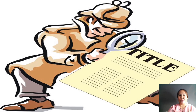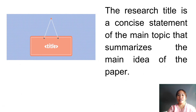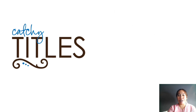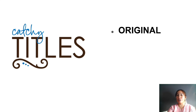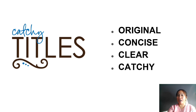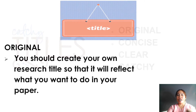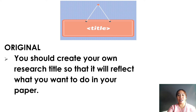Now, after you choose your topic based on the given guidelines, you are ready to construct your own research title. The research title is a concise statement that summarizes the main idea of your paper. Your research title should be original, concise, clear, and catchy. It should be original in the sense that you create your own title to reflect what you really want to do in your paper, because your title should be unique and innovative.